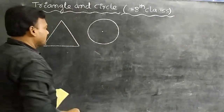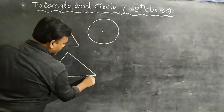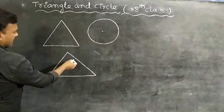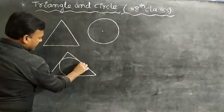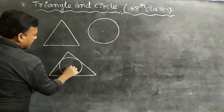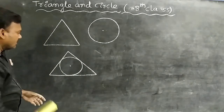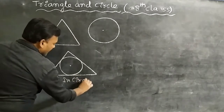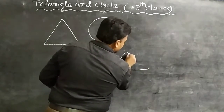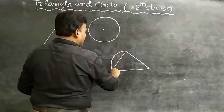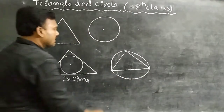Now, what is an incircle and what is a circumcircle? Observe carefully. A circle that touches all the sides of a triangle is called an incircle — it is inscribed inside the triangle. A circle passing through all the vertices of a triangle is called a circumcircle.